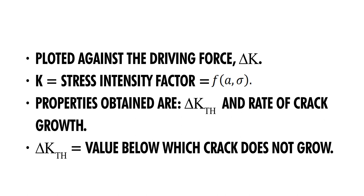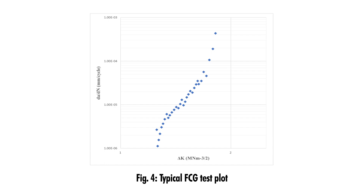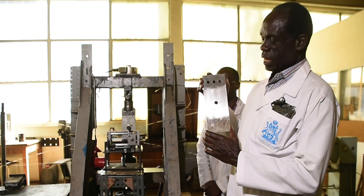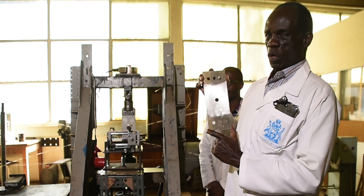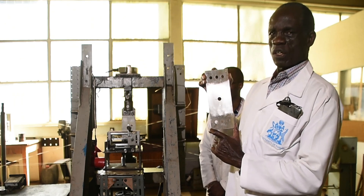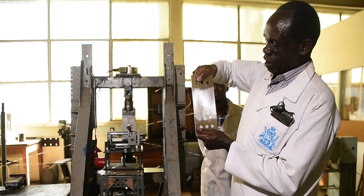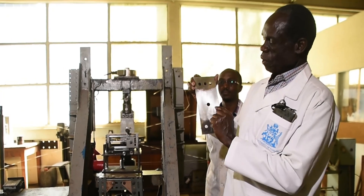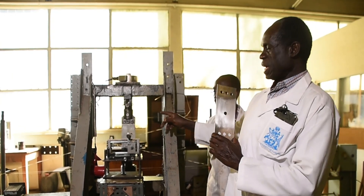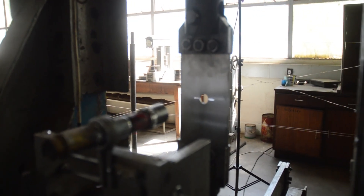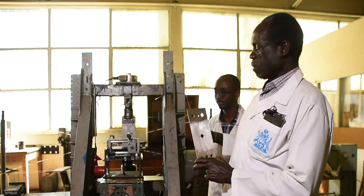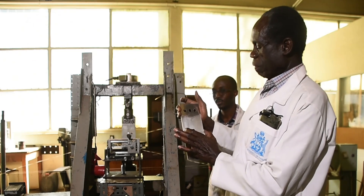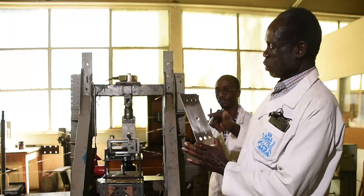Delta K threshold is the value of delta K below which a crack will not grow. In this test, the specimen already has a crack, and we measure the rate at which that crack grows. We apply a cyclic load to the specimen and monitor the crack length using a travelling microscope. By moving the travelling microscope, we measure the crack length and record the number of cycles elapsed, continuing until the specimen breaks or there is gross section yielding.